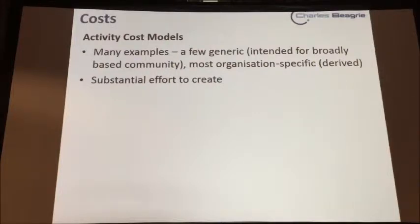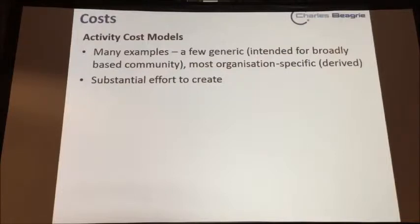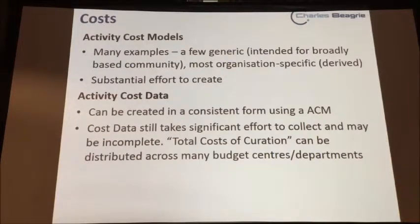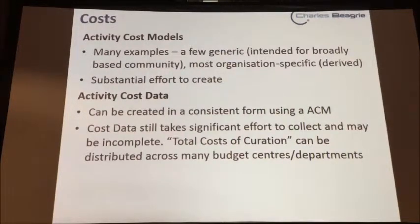An activity cost model requires substantial effort to create — they are major research projects in their own right to evolve. Once we have activity cost models, we're able to produce activity cost data in a consistent, comparable form. However, cost data still takes significant effort to collect and may be incomplete, because the total costs of curation can be distributed across many budget centres and departments, including indirect contributions like accommodation. Bringing those costs together and comparing them across organizations, or comparing in-house versus outsourcing, can be very difficult.